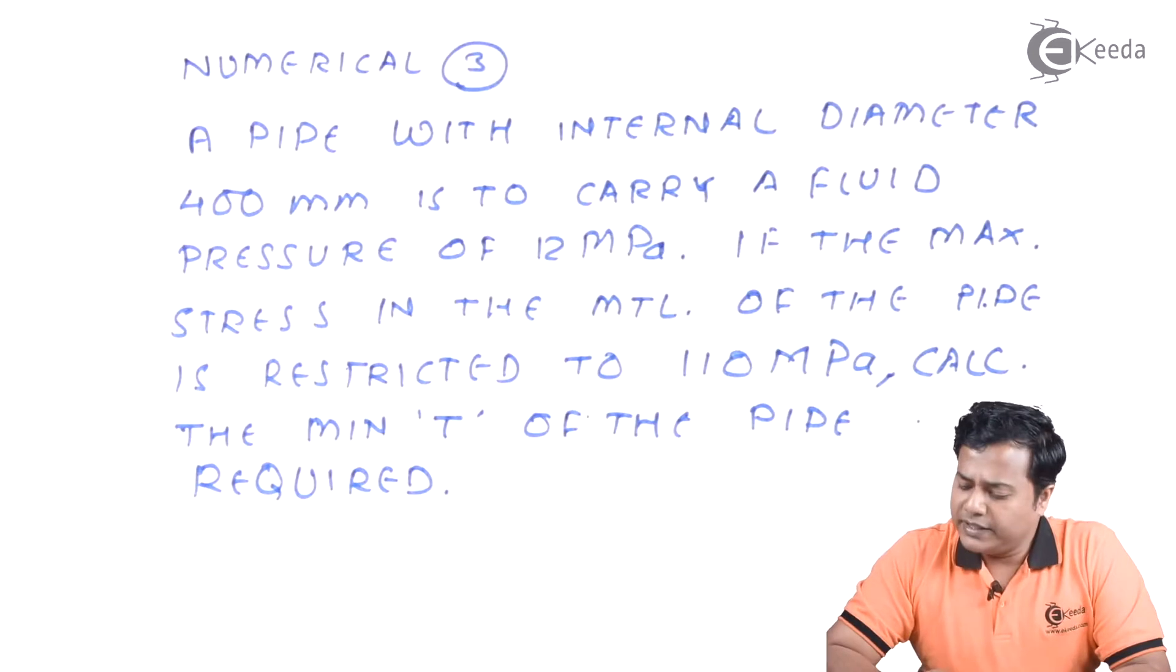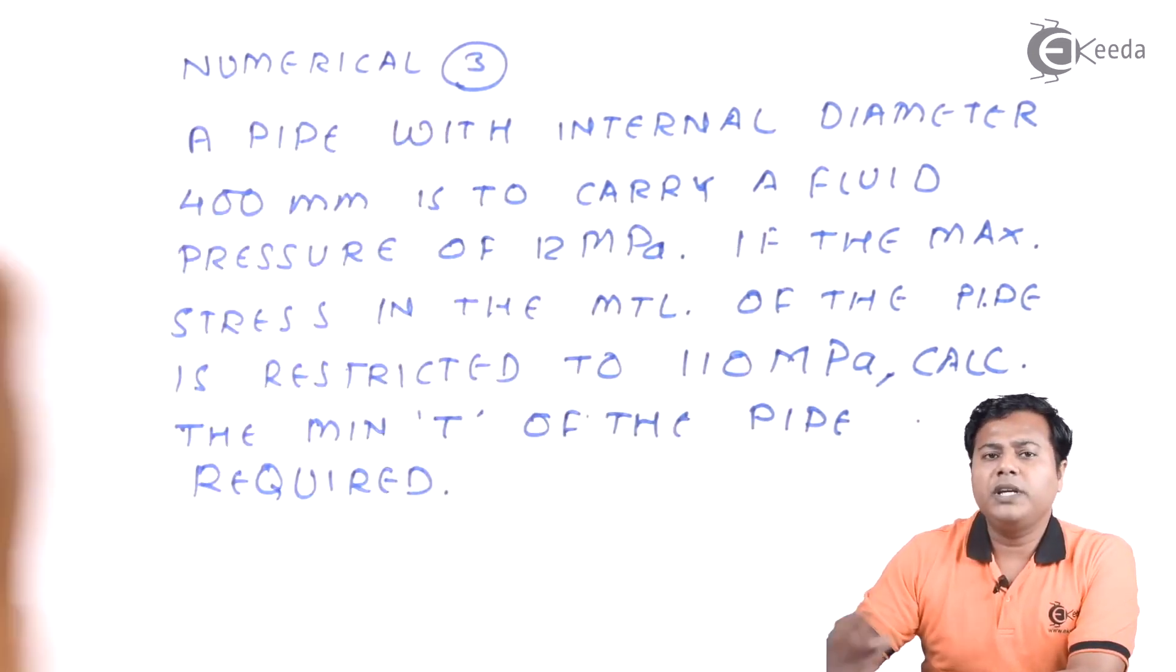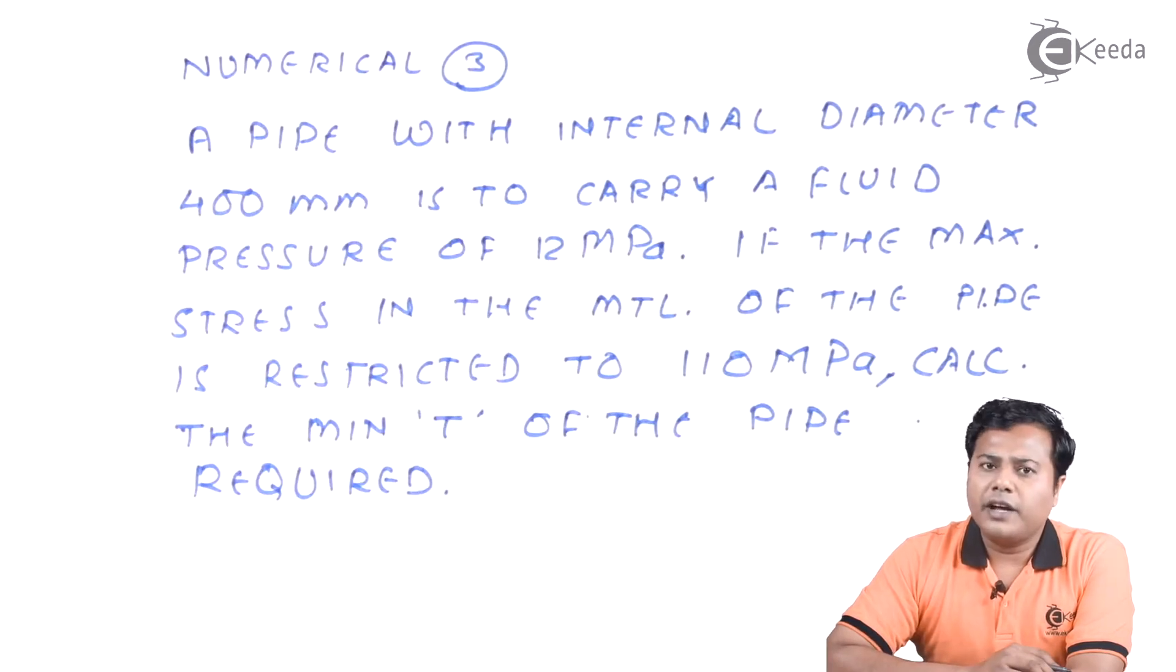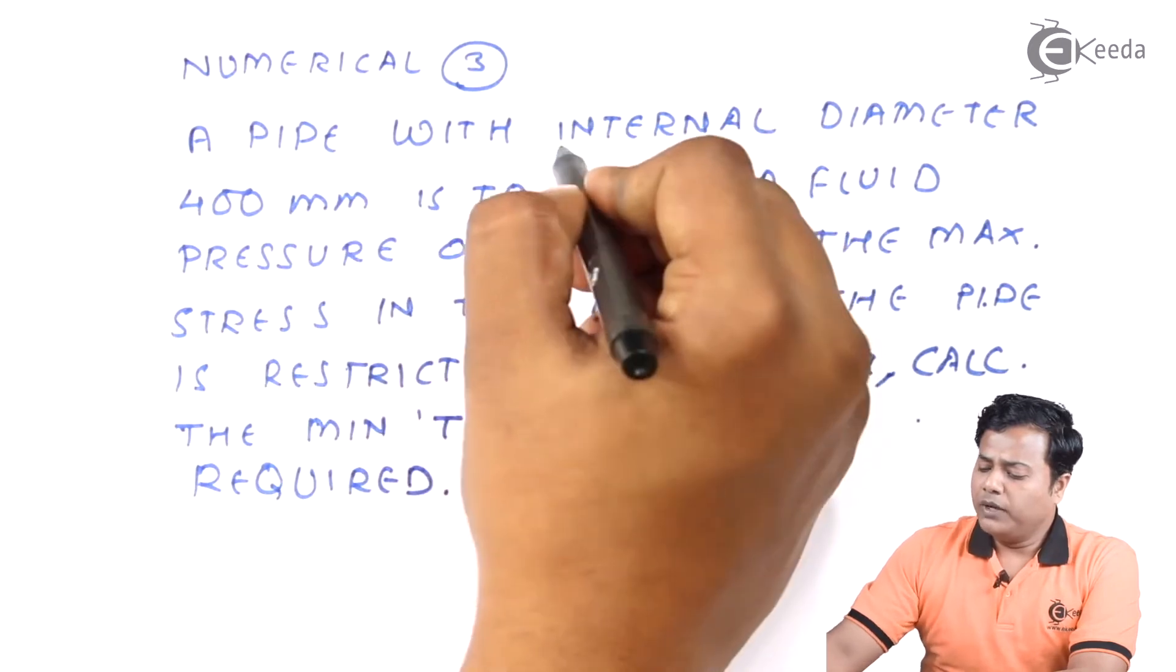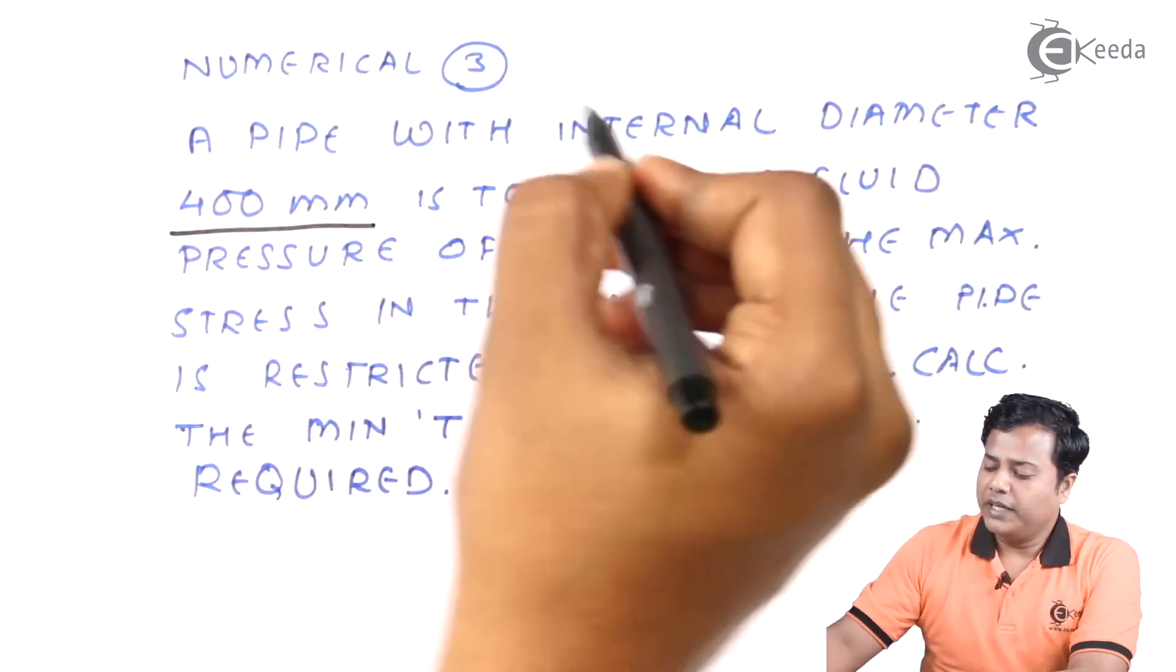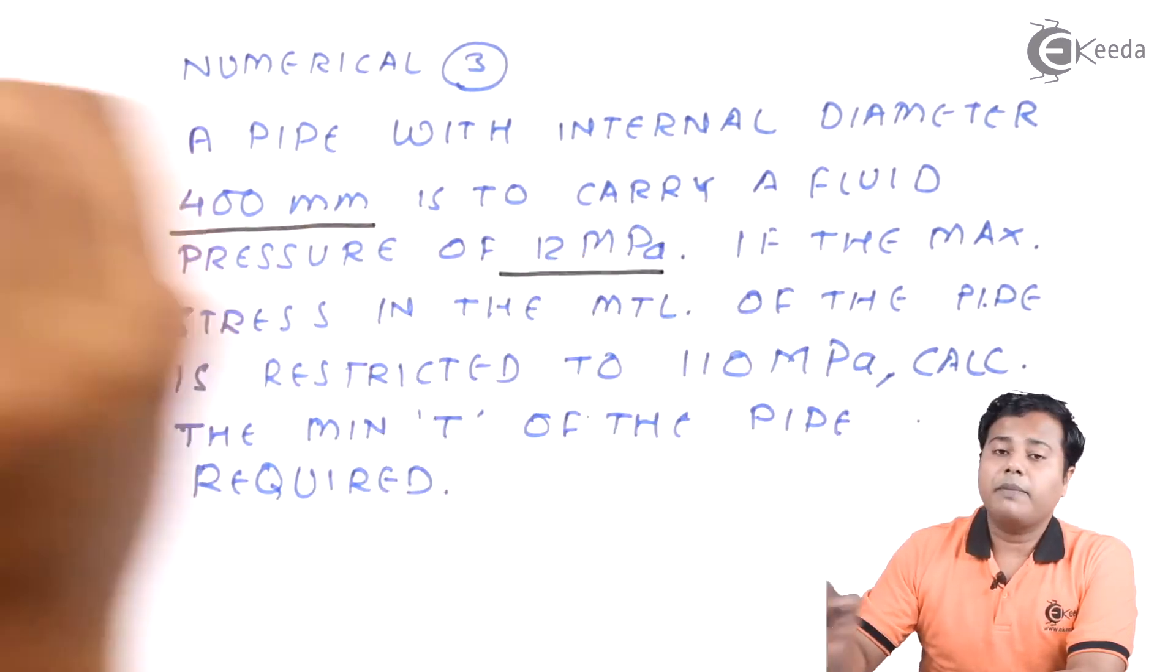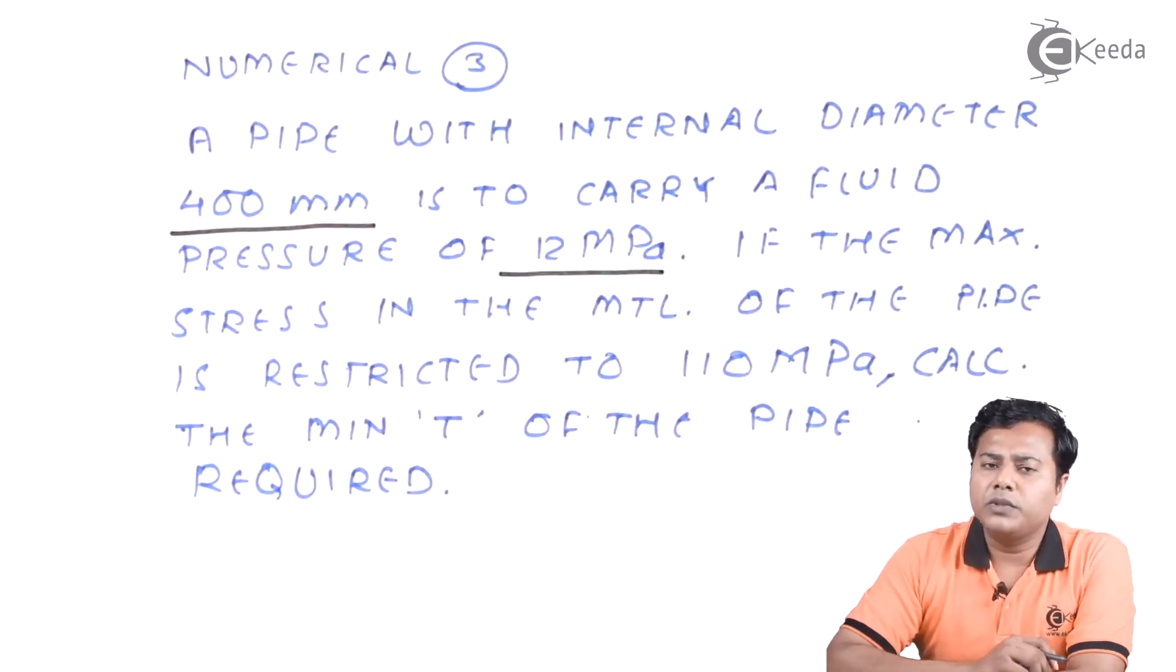It is there in front of you. It says that a pipe with, now when they say pipe, it has to be some internal and external diameter. So it falls under the category of cylinders. A pipe with internal diameter of 400 mm is to carry a fluid pressure of 12 megapascal. So that is 12 Newton per mm square.